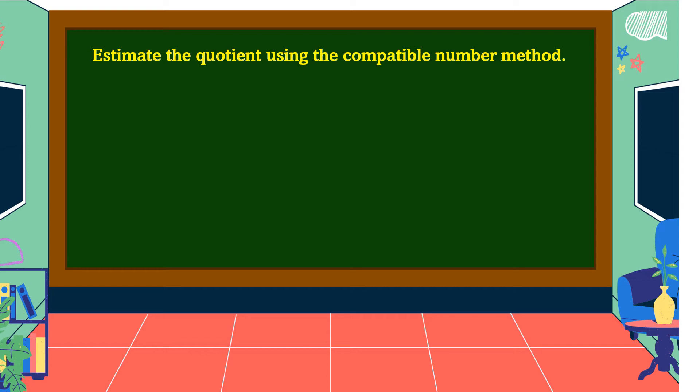Another example: estimate the quotient using the compatible number method — 462 divided by 8. Our divisor is a one-digit number, so we find a compatible number to the first two digits from the left in our dividend. Let's analyze if 46 is a compatible number to 8. It is not because 46 is not divisible by 8. What is the nearest number to 46 that is divisible by 8? Let's review the multiples of 8.